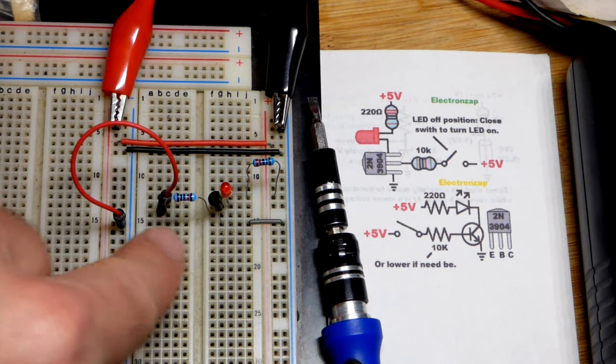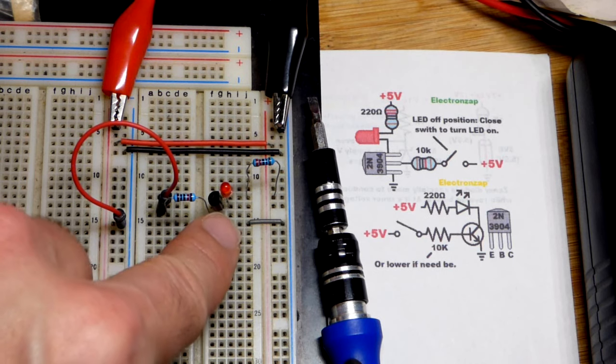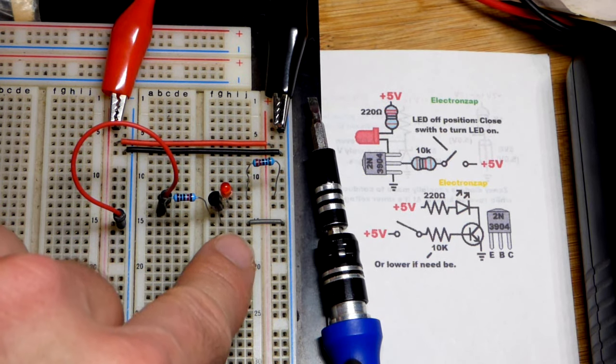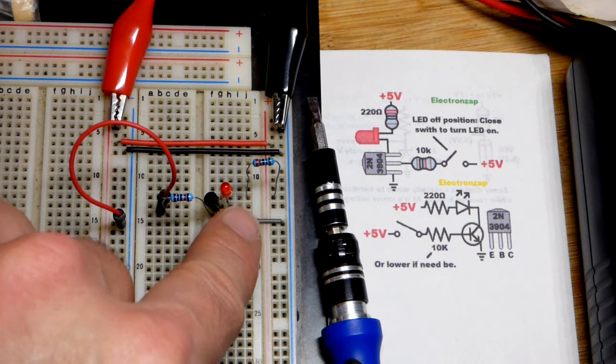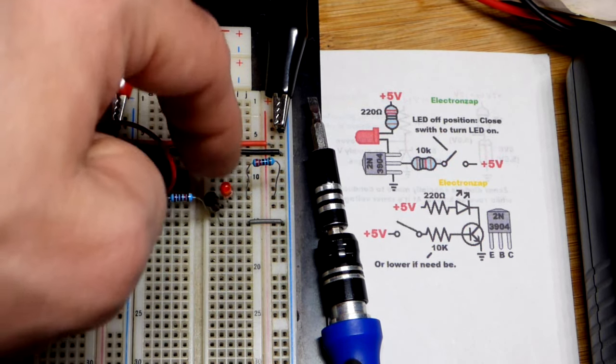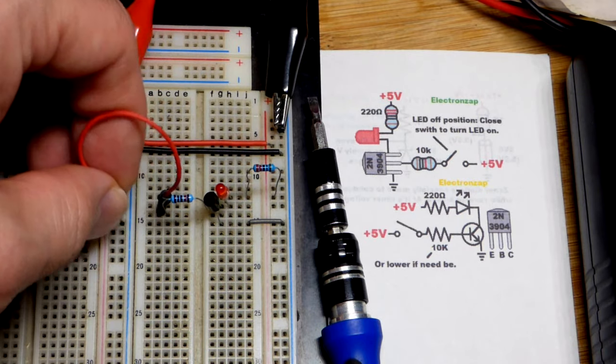This is a 10,000 ohm resistor to the negative supply that turns the NPN bipolar junction transistor off. The emitter is down to ground. Base in the middle is connected to that resistor and then the collector is up here with a load, an LED.